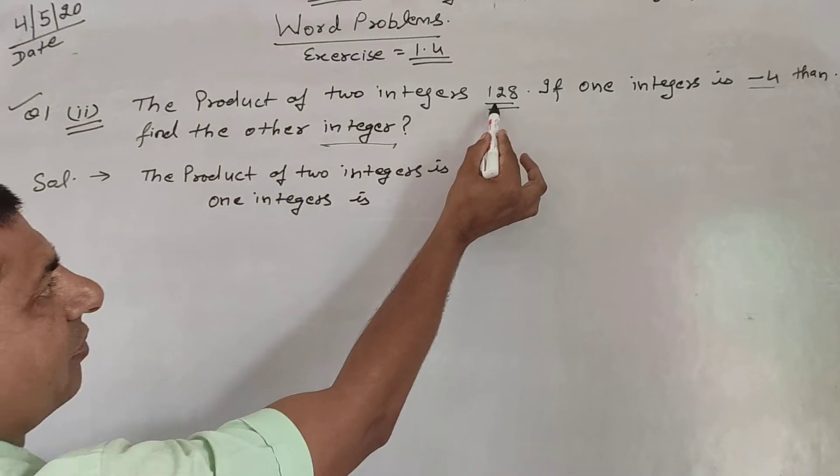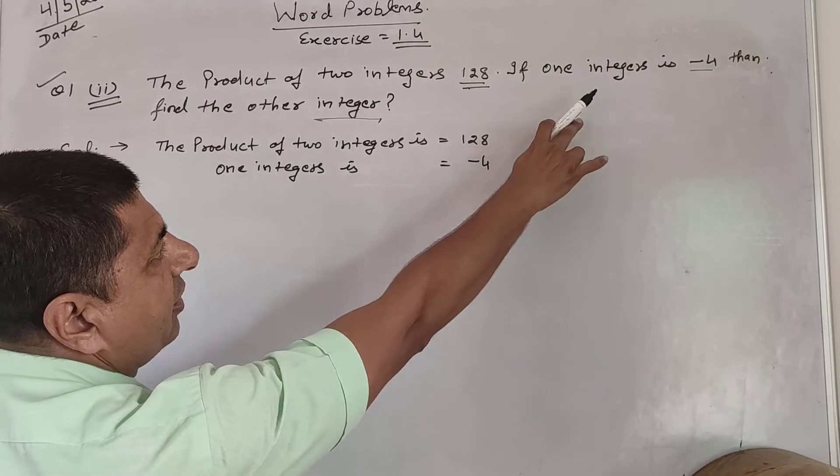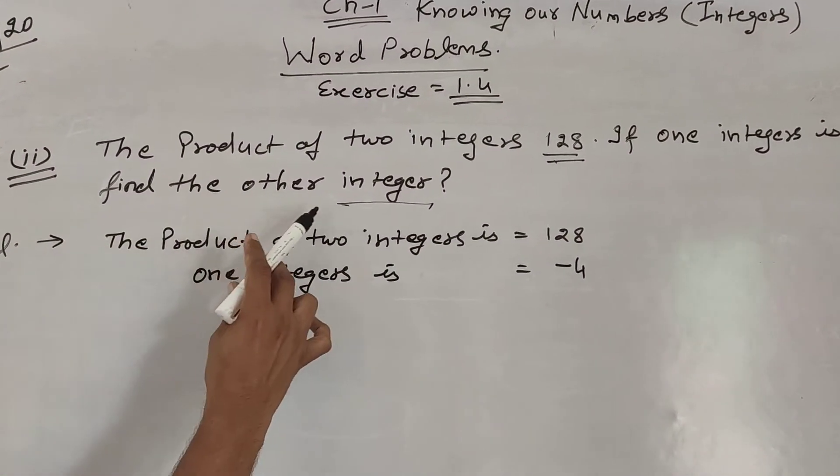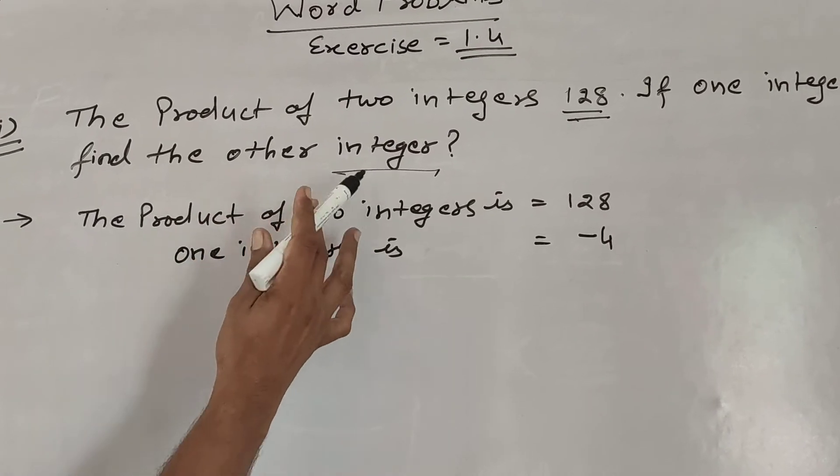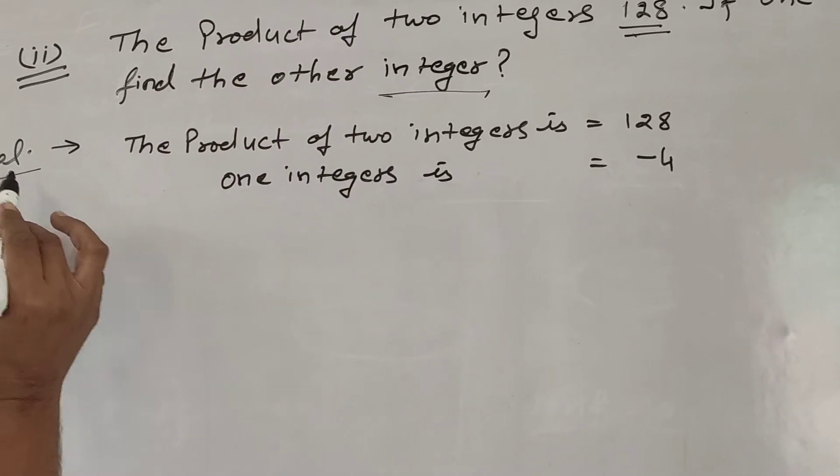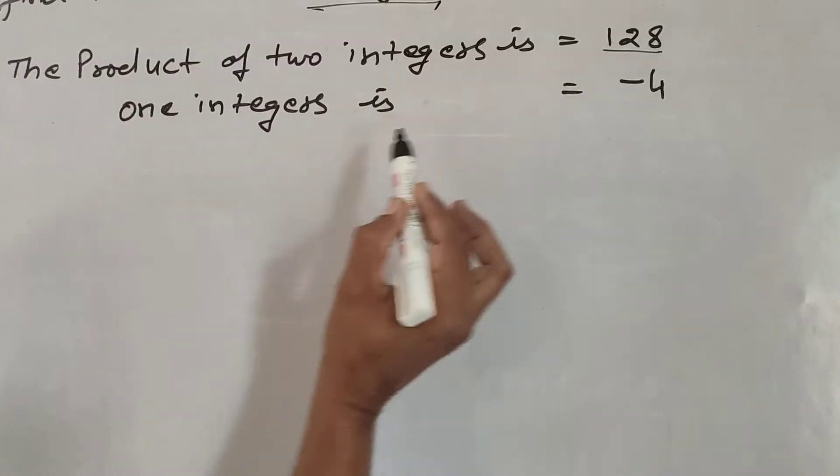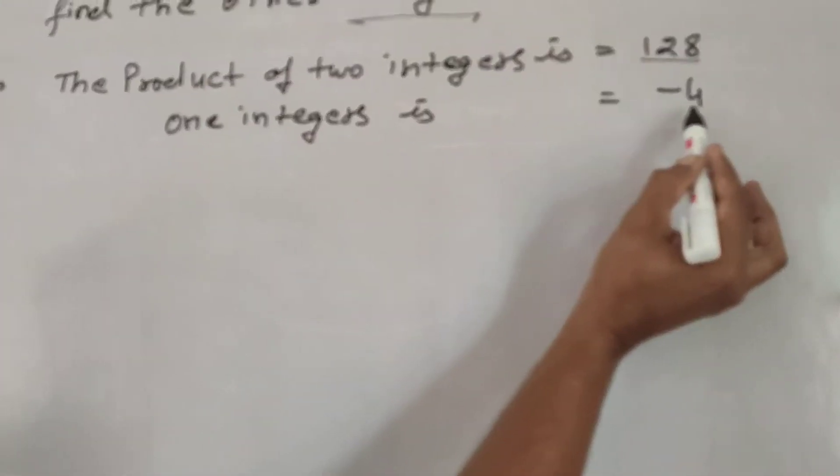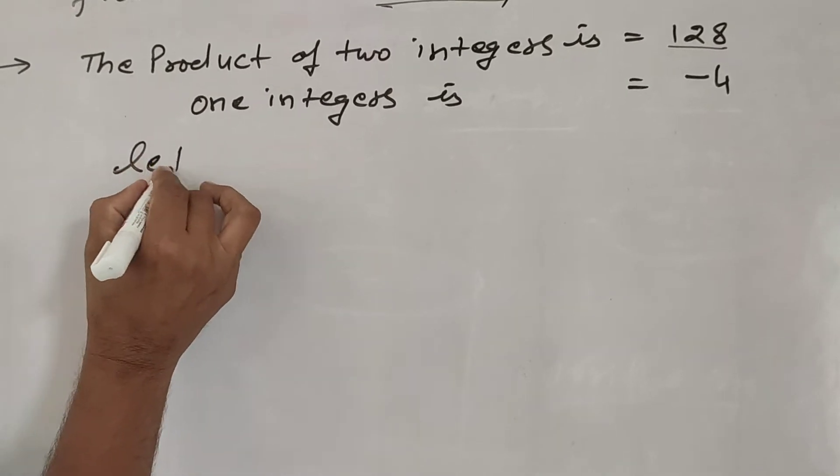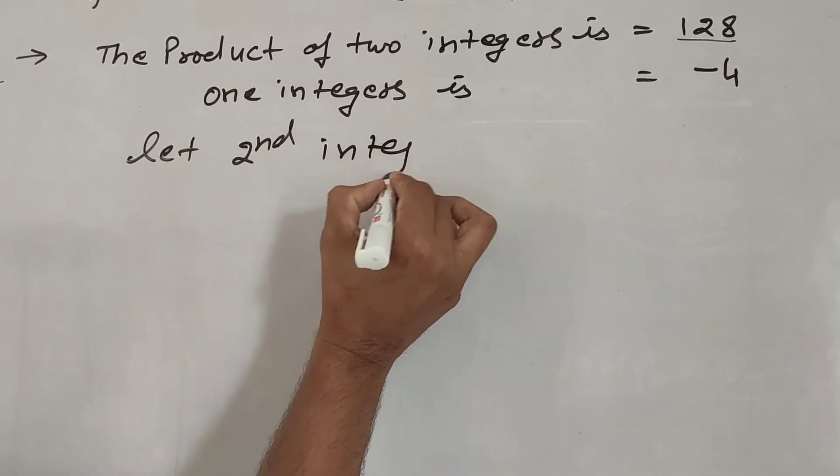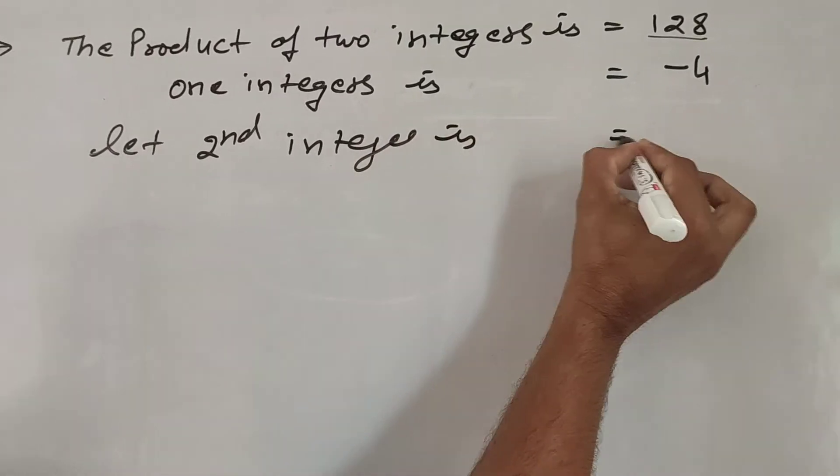So, the product of two integers is 128, one integer is minus 4, find the second integer. The product of two integers is 128, one integer is minus 4, so let the second integer be x.